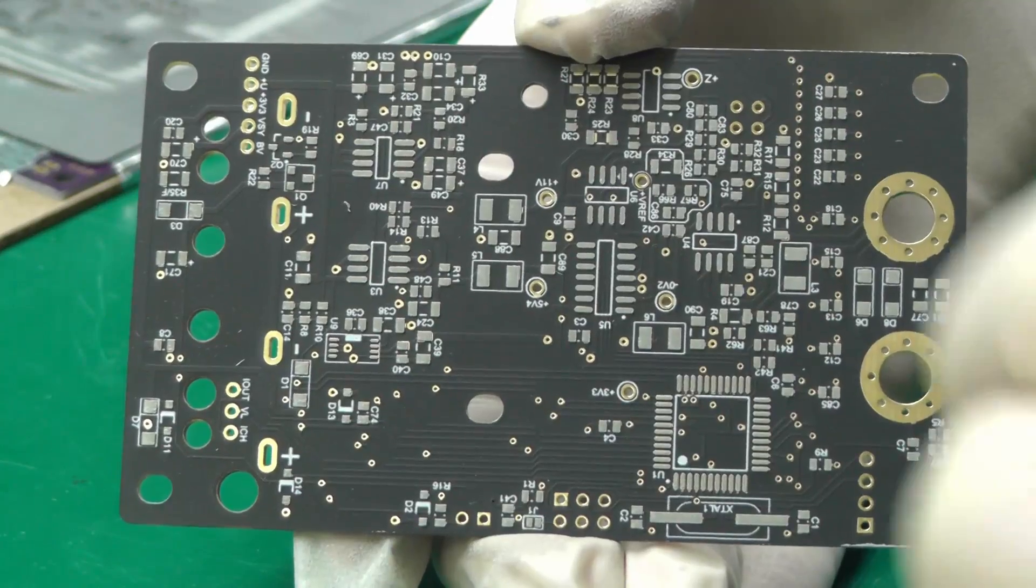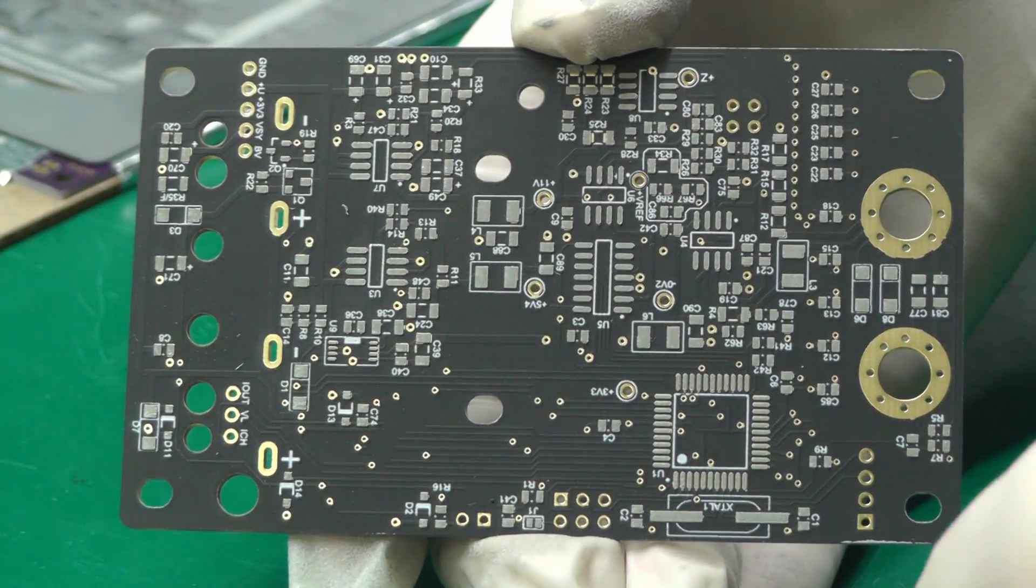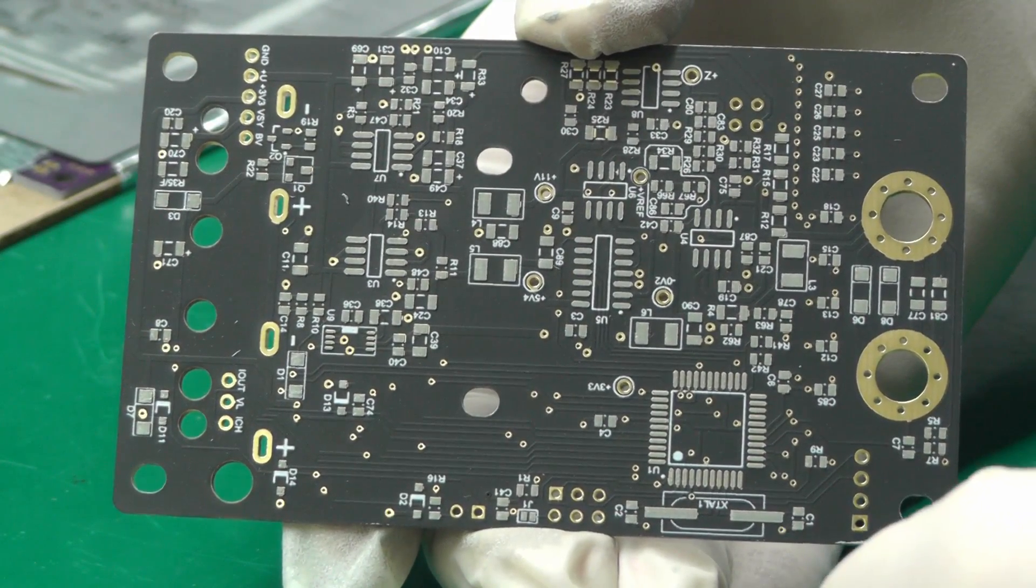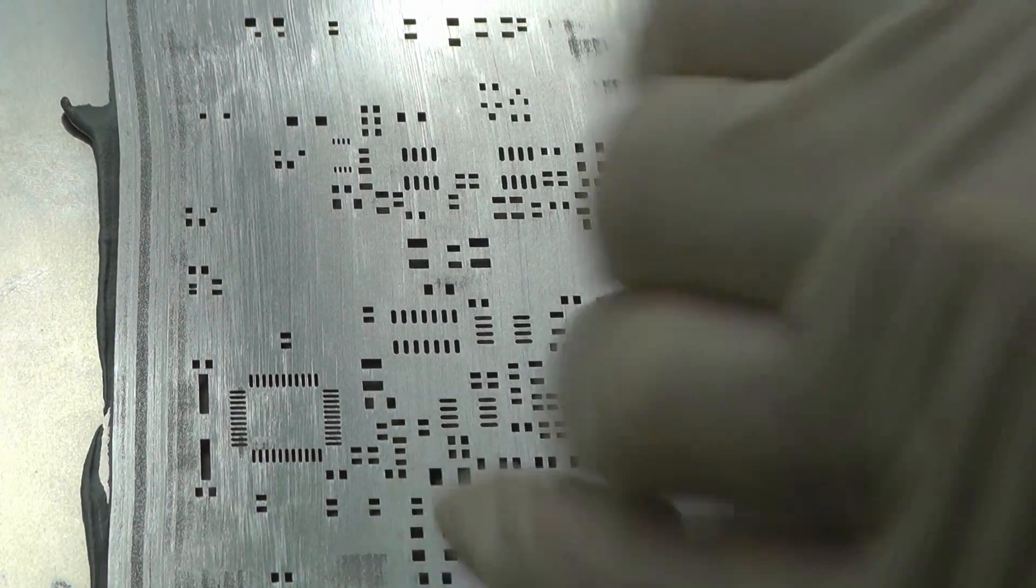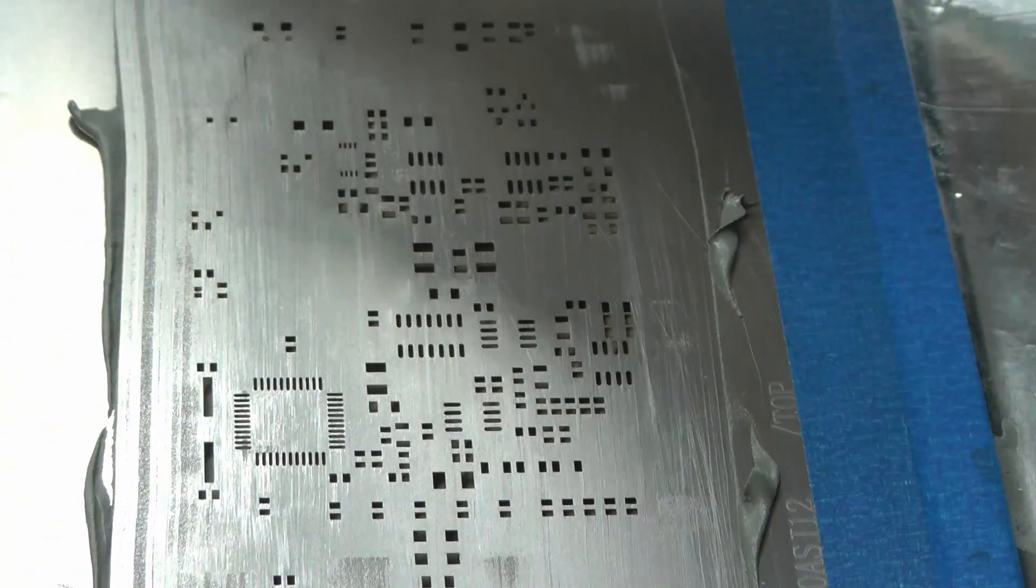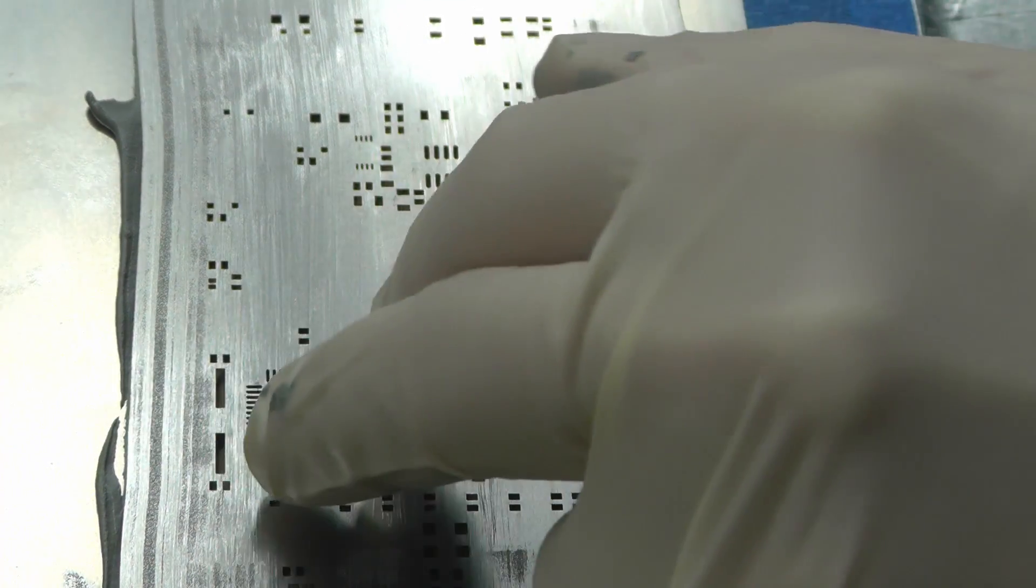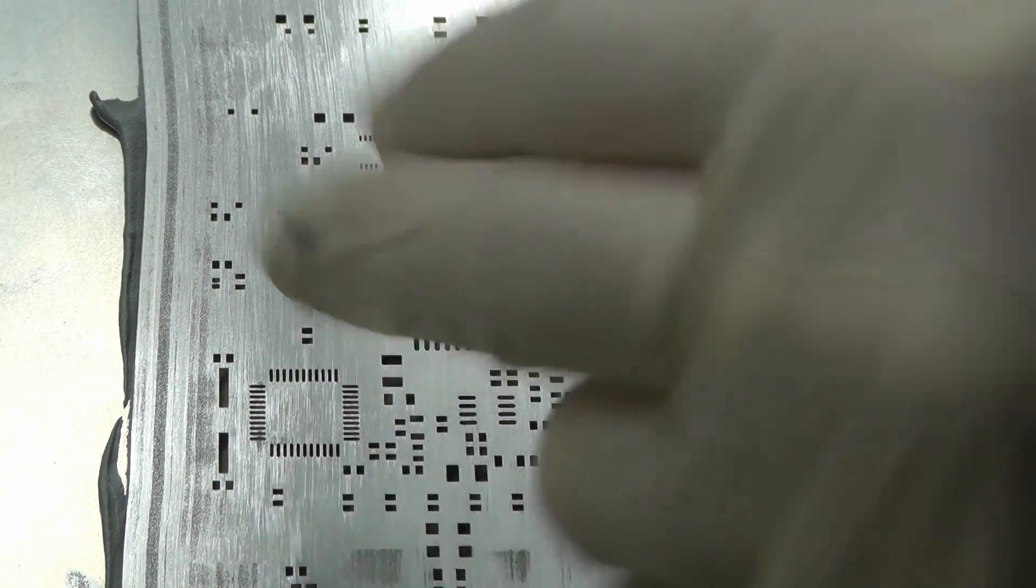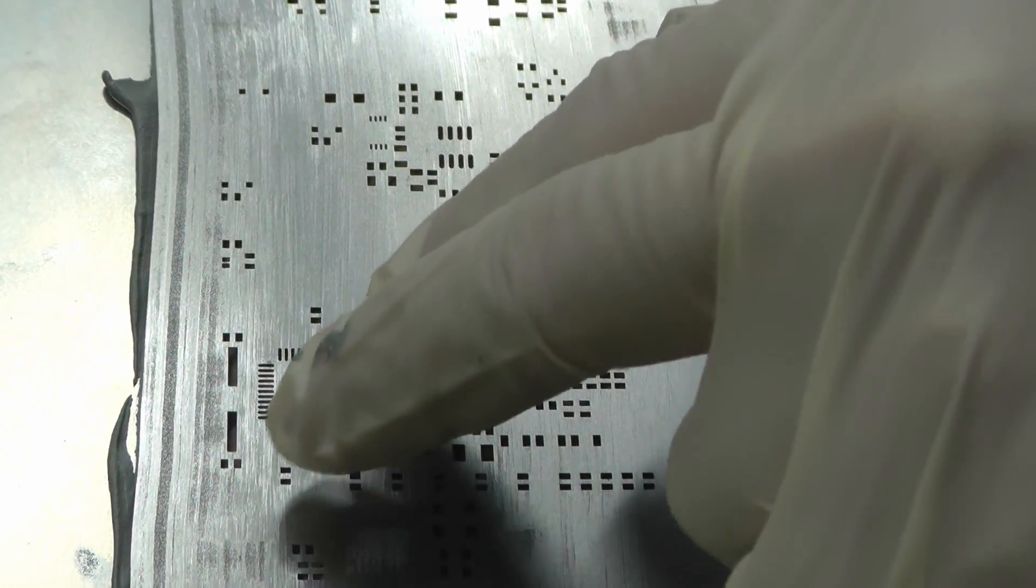The other thing to notice when you're doing the stencil with my method is there's no retraction on any of the pads through the stencil. What that means is that when you're dragging the blade across the stencil, sometimes the paste won't adhere to the pad and it sort of drags it back off again and exposes the underlying pad through the hole in the stencil.